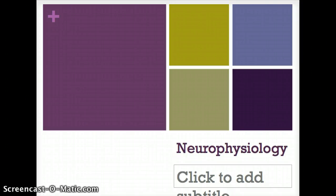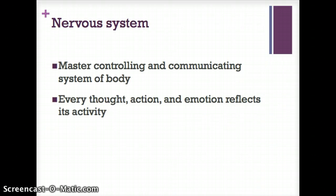Today we're going to talk about the nervous system and about some neurological disorders that affect communication. The nervous system depends upon the ability to process and respond to information, so things such as language function and speech are very important, as well as motivation, learning, and behavior. The nervous system is the master controlling and communicating system of our body.